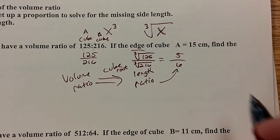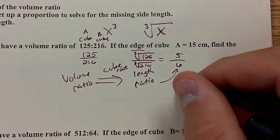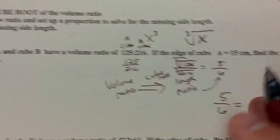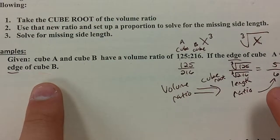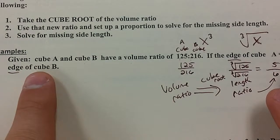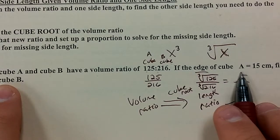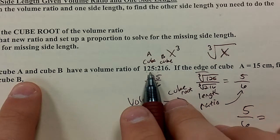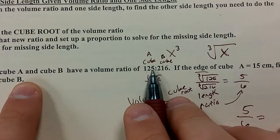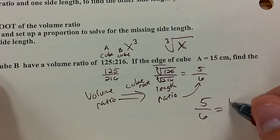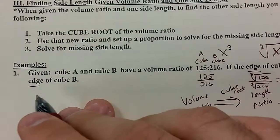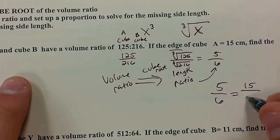So if you have a missing length, like we do here, edge of cube B, we have X and 15. So X will be your missing side for cube B. 15 is the given side length, cube A, the edge. That number is on top. It moves to the left here, so 15 goes with 5. That means X, the edge of cube B, goes with 6.